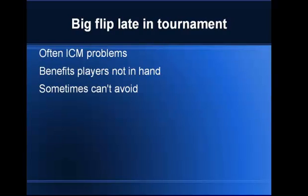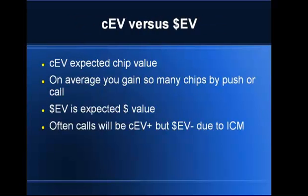The big flip late in the tournament — a lot of times you can't avoid it. You have two pair against the combo draw, or Ace-King against Jacks pre-flop, or whatever. So you have to get it all in. But if you can avoid these things, you want to, because the defensive player is not in hand. On the other hand, you don't want to play too tight and just fold everything. So this is a tricky situation.